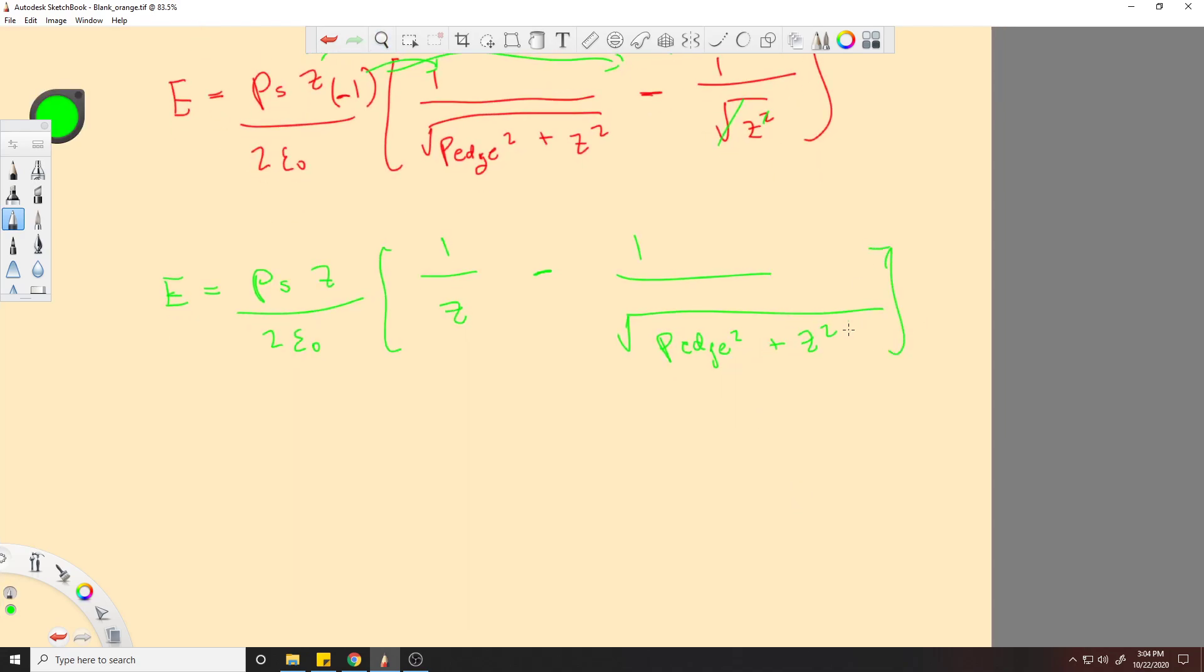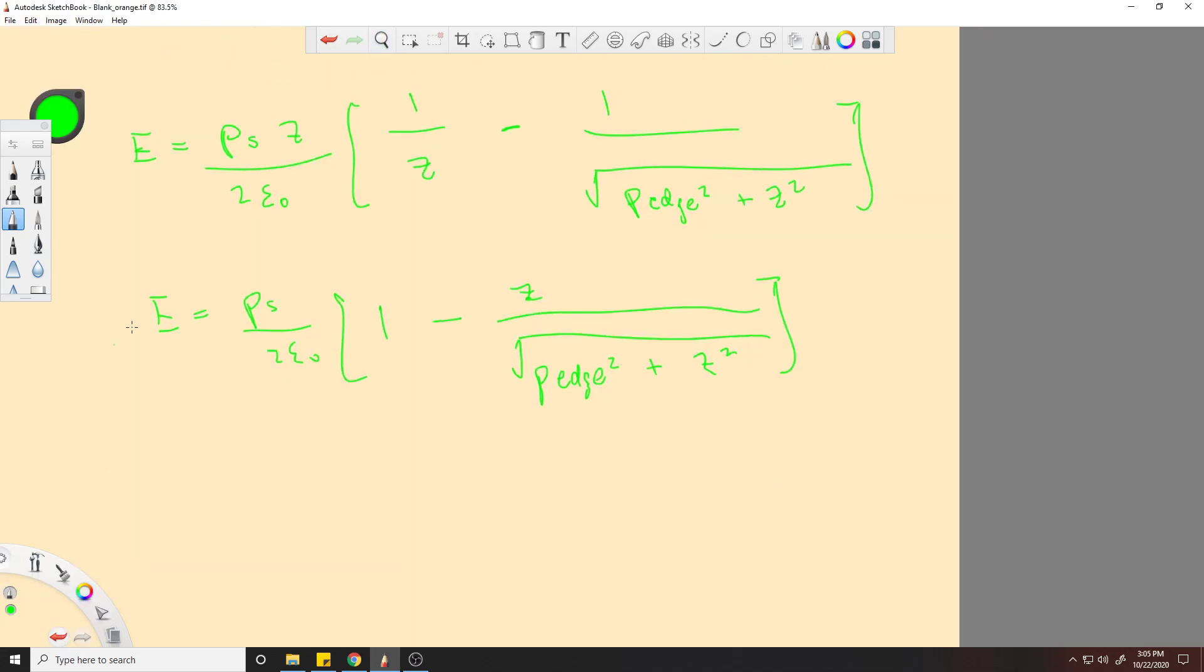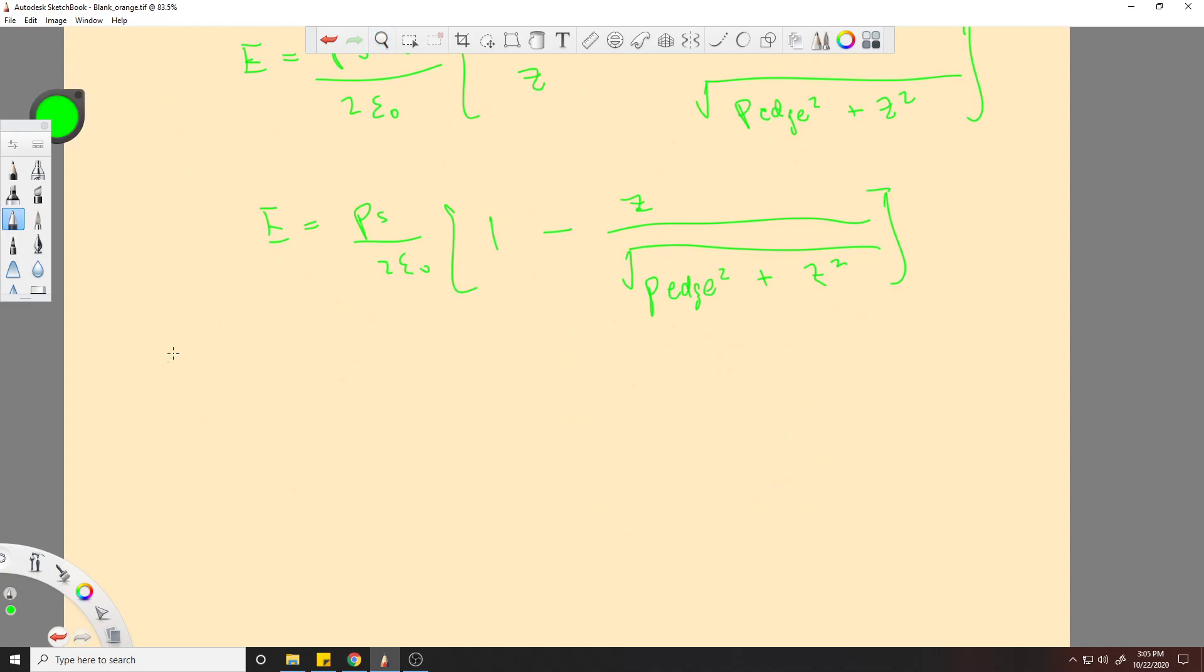So it'll be 1 over z squared to the z squared. All right, now I'm bringing in the z. So that'll be 1 over z, so that'll be 1, and then this will be z. So this will be 1 over z squared plus z squared.